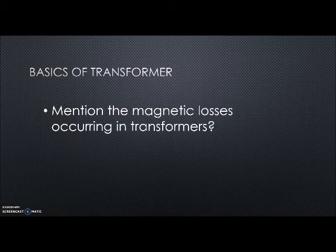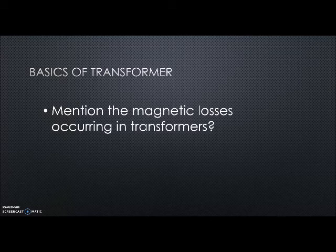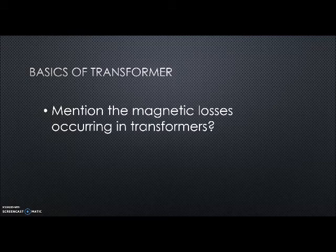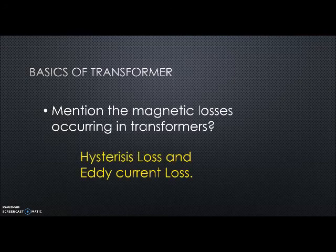Usually, transformers will have two types of losses: copper loss and core loss. Core losses are otherwise called magnetic losses. There are two main losses occurring in the transformer's core. They are hysteresis loss and eddy current loss.